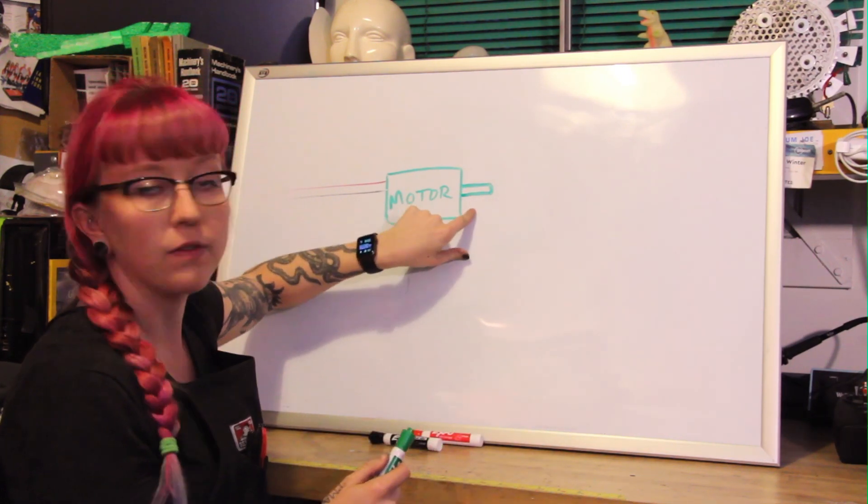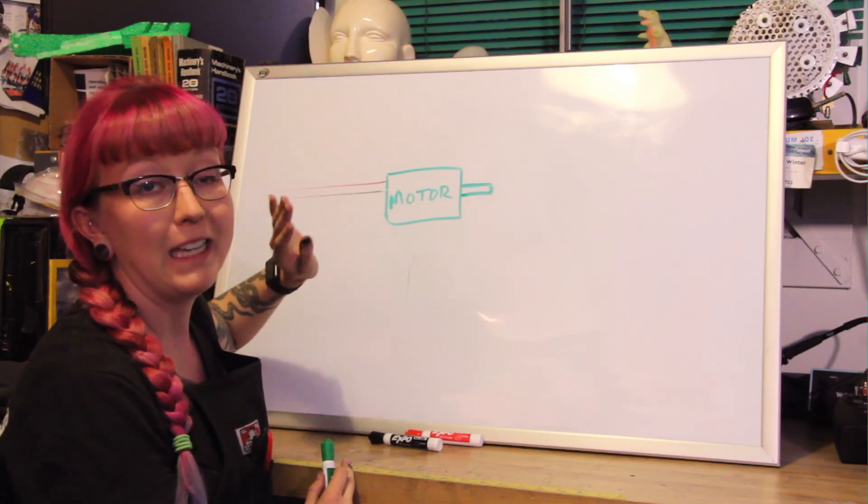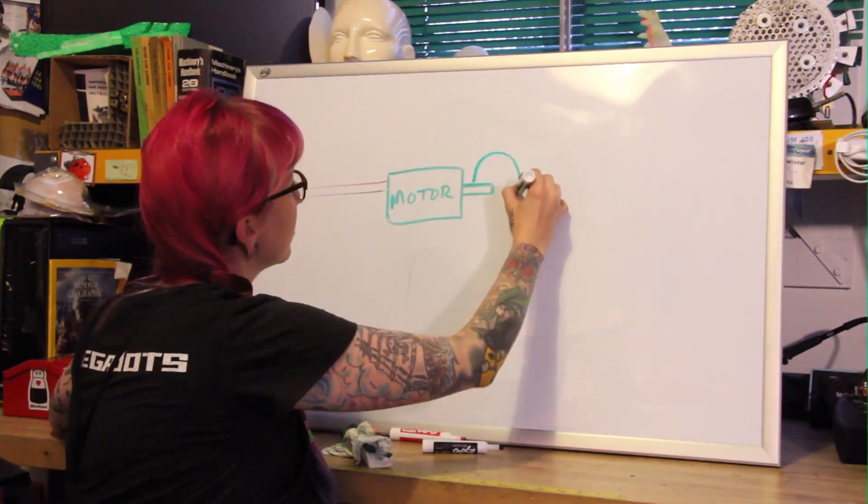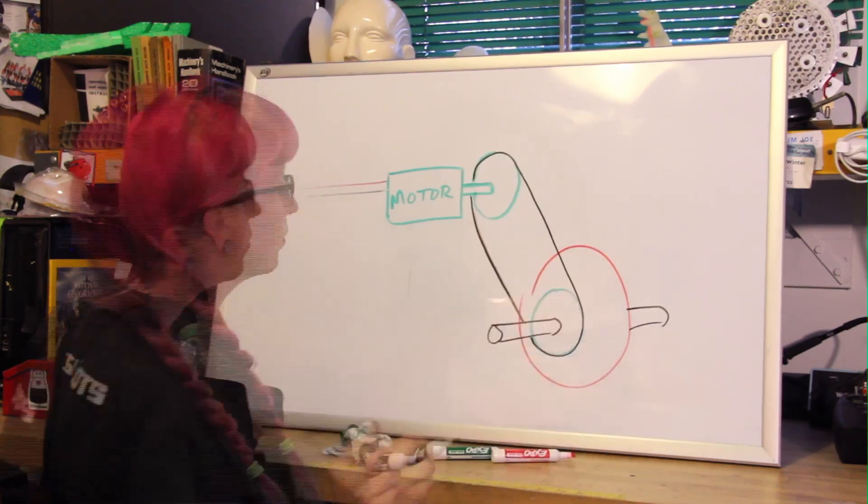And if it was attached to the shaft of the motor, that force would go all the way into the motor and just totally ruin it. So we don't want to do that. How we save our motor is to add some sort of slip into the system.